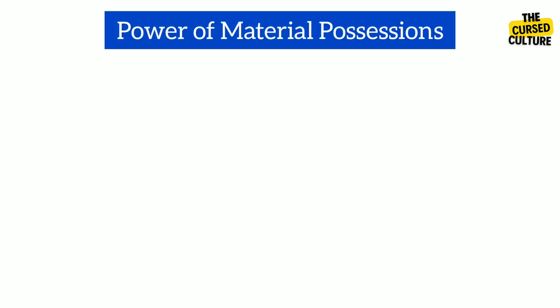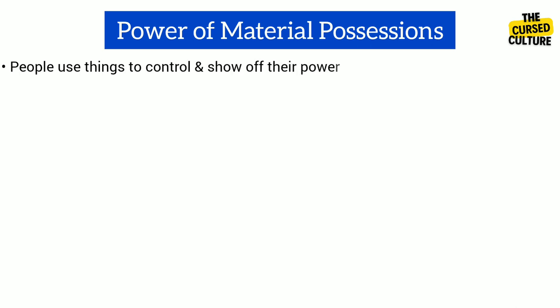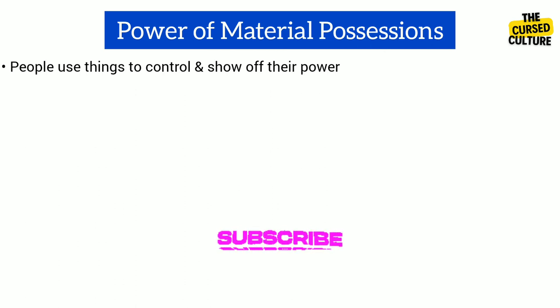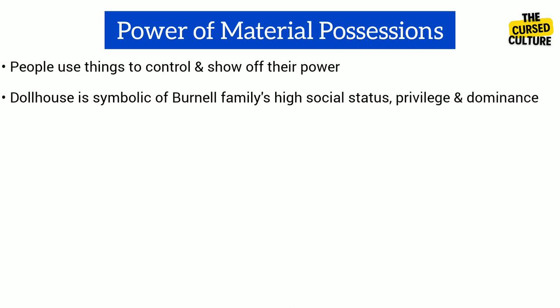The power of objects in the story is like a symbol of how material things can shape our lives — making some people feel superior and others feel inferior. It's about how people use things to control and show off their power. The Burnell sisters' dollhouse is a beautiful and expensive object, like a tiny version of a real house with tiny furniture and dolls. The Burnell sisters are proud of it, and it becomes a symbol of their family's high social status and privilege. Everyone in their school wants to see it, and it makes the girls feel special and important.